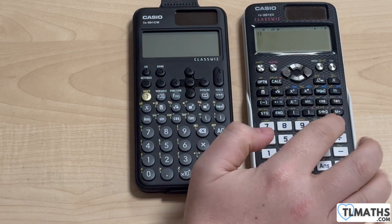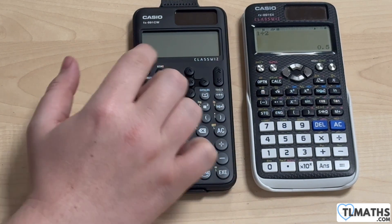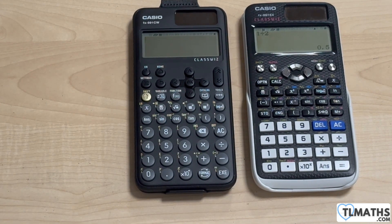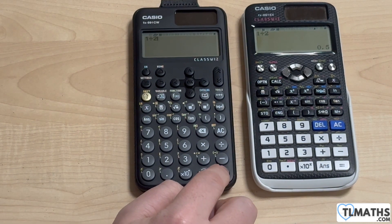Now if I type in 1 divided by 2 onto my calculator, then it automatically comes up with a half. And if I want to change it to a decimal, I just press the SD button. Okay, now on the new ClassWiz, if I do the same thing, 1 divided by 2, press the execute button, I get the one half.